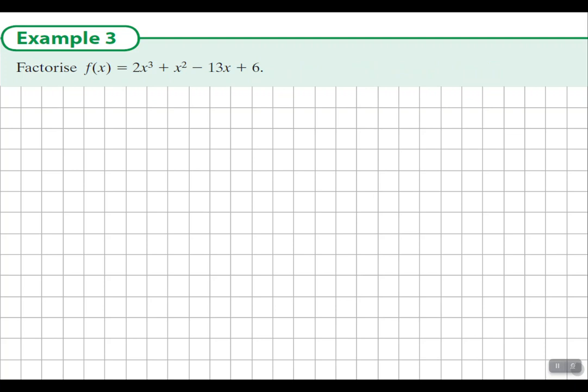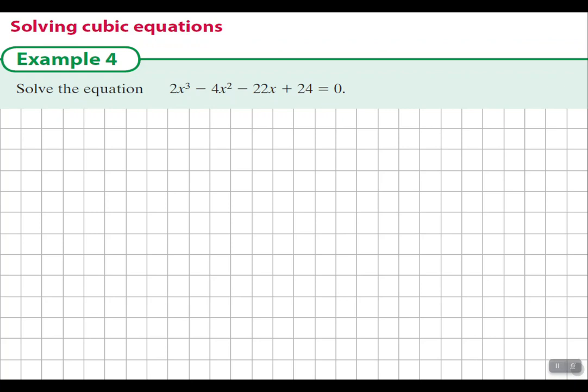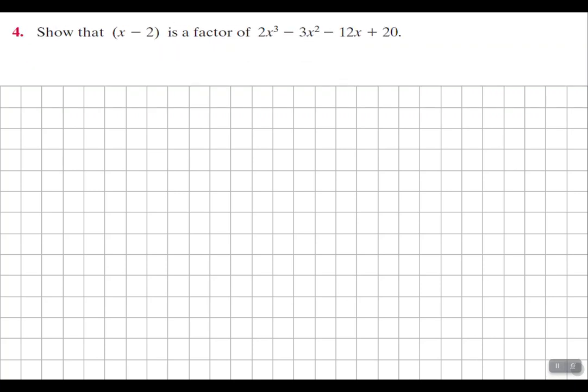We will use the factor theorem and trial and error to find one root. From that we'll get a factor, from that we'll get long division or polynomial division of some sort, then we'll get the quotient with no remainder, and we'll factorize that. We'll factorize and set everything equal to zero and use the null factor theorem. Then we'll do various exercises to reinforce our learning.